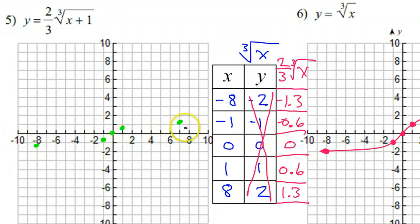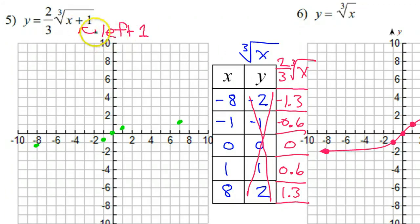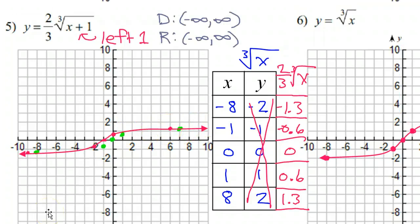Now apply the translation. The plus 1 inside sends us left 1 (opposite of what you'd normally think). Move each guide point one unit to the left — this is the final answer. Draw the curve through those guide points. Your final answer for number 5 should look like that, and the domain and range are still negative infinity to positive infinity.